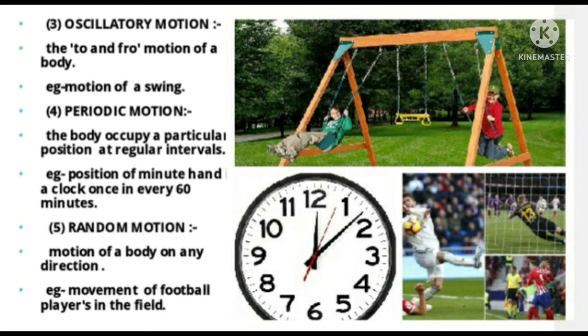Periodic motion: the body occupies a particular position at regular intervals. Example: the position of a minute hand on a clock once every 60 minutes. Every 60 minutes, the needle stays in a particular position.